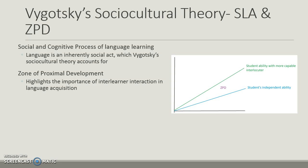Vygotsky's sociocultural theory has been strongly connected with second language acquisition and the zone of proximal development. Social and cognitive processes highly impact language learning — language is an inherent social act. The zone of proximal development highlights the importance of interaction between a student at their independent ability level — the lower level of the ZPD — and the student's ability with a more capable interlocutor or more knowledgeable peer. The ZPD is the distance between what the student can do on their own and what they can do with the help of a more knowledgeable peer.